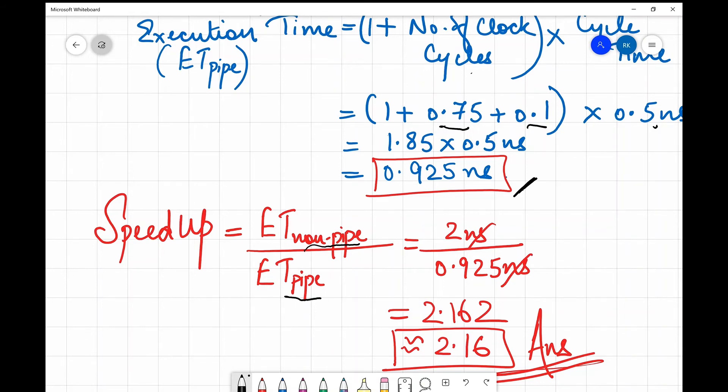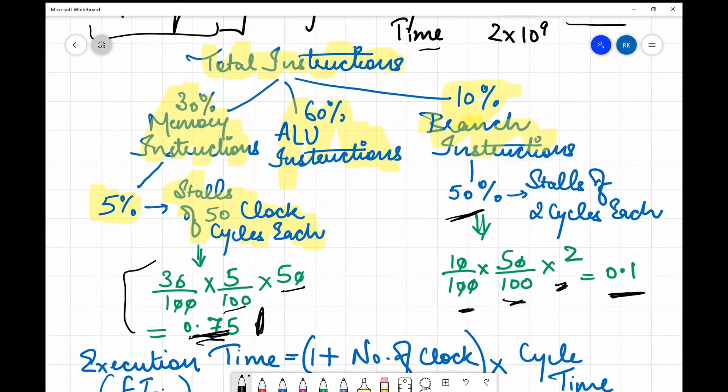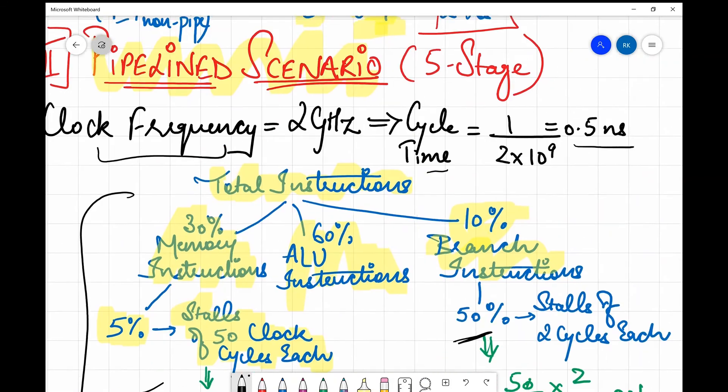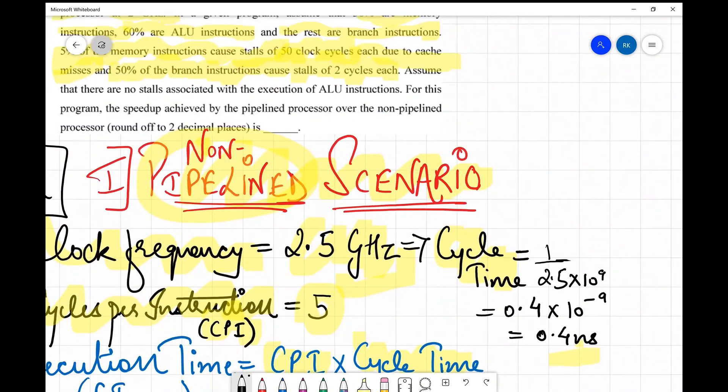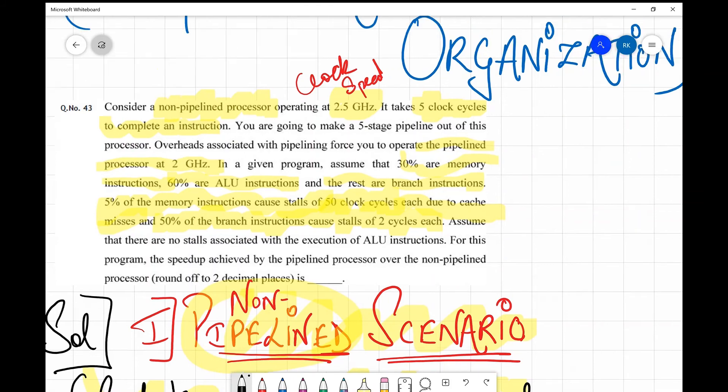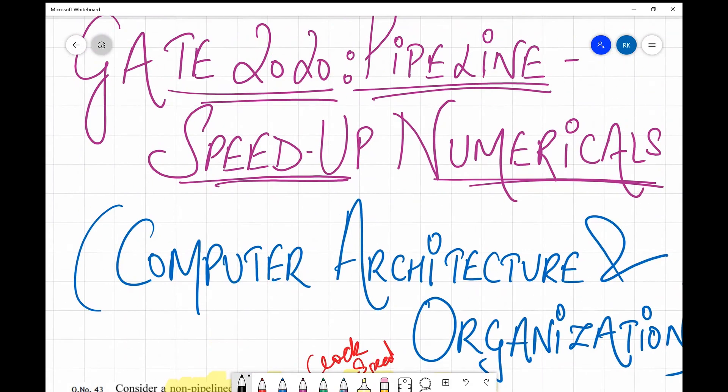So this was a very basic numerical. Though the examiner had given some additional information, it is essentially required that you just void it diagrammatically and it becomes very simple. Apart from this I didn't find anything tricky in this numerical, but it is very important since pipelining is a very important topic from computer architecture and organization. You should always practice these kinds of numericals.